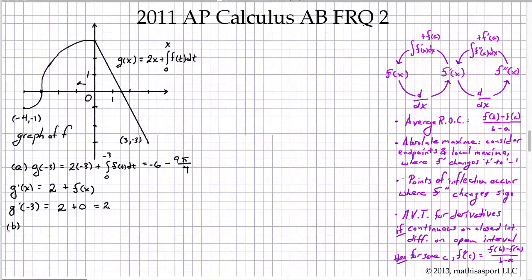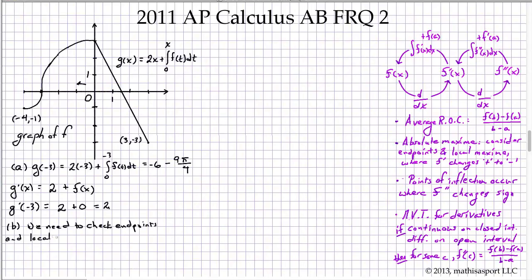Part B asks where the absolute maximum occurs and to justify the answer. We need to check both the endpoints as well as any local maxima on the interior.